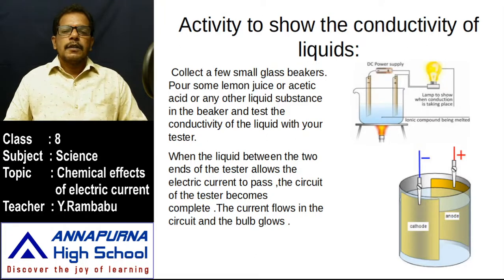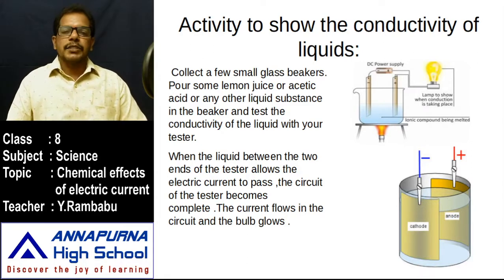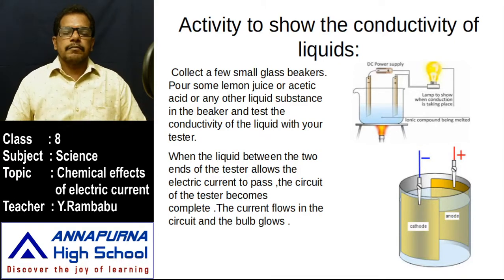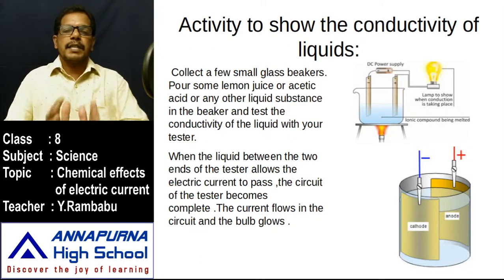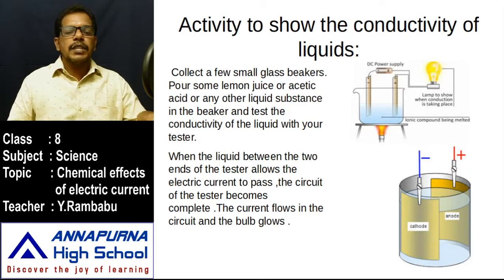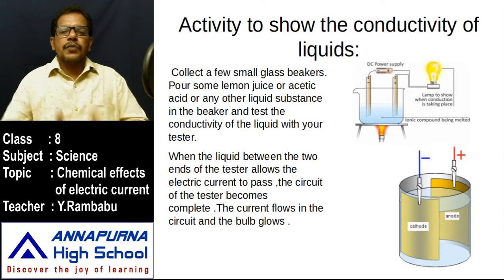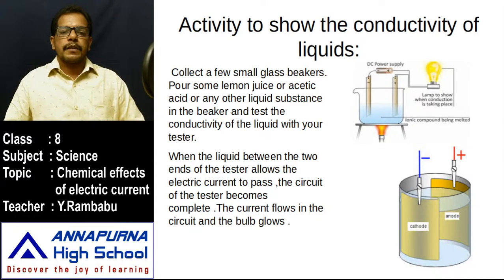The two electrodes — anode connected to the positive terminal and cathode connected to the negative terminal — are placed in a liquid solution. The liquid through which electricity passes is called an electrolyte. This entire setup — the beaker including the electrodes and electrolyte — is called an electrolytic cell. When electricity passes through this arrangement, ions in the liquid are responsible for carrying the charge, just as free electrons carry charge in solid conductors.